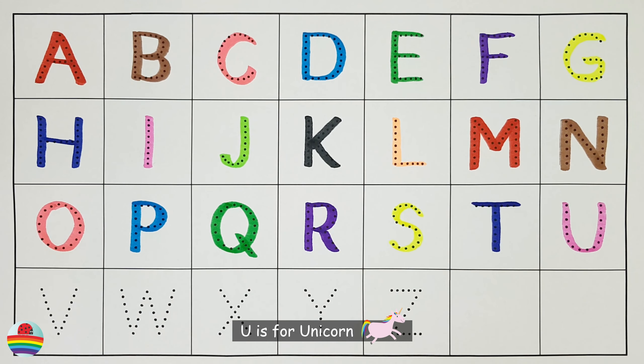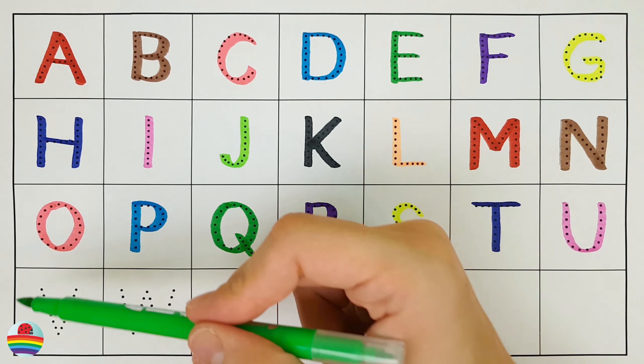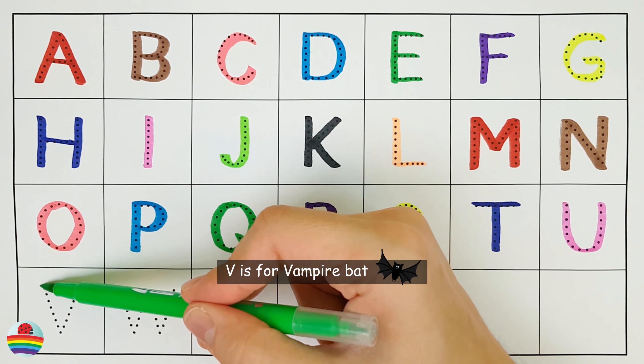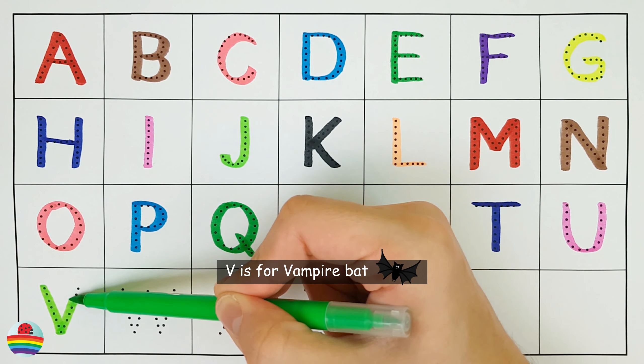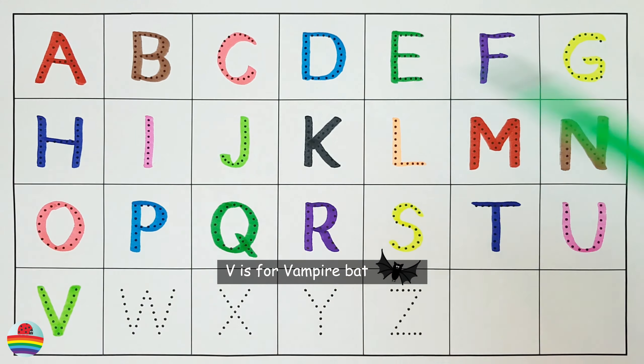U. U is for Unicorn. U. V. V is for Vampire Bat. V.